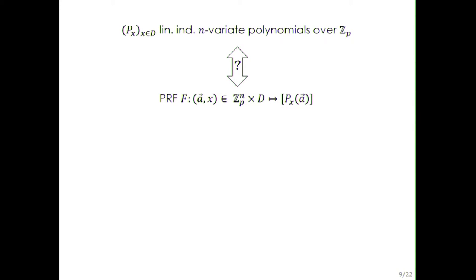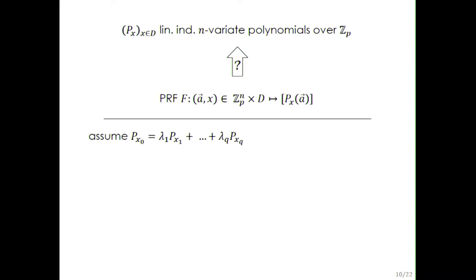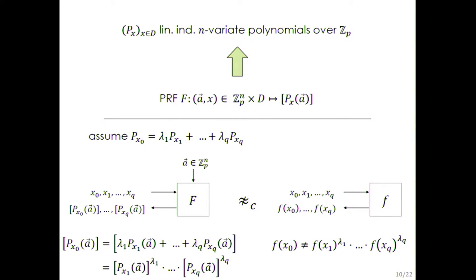The first direction of this equivalence is that for having a pseudorandom function defined as described, it is necessary that the polynomials are linearly independent. We can show this by contradiction: if there is a relation between the polynomials defining the output, this relation holds in the real world but not in the random world. So linear independence is clearly a necessary condition.